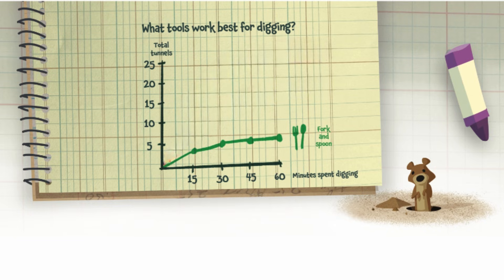The first line represents tunnels dug with fork and spoon. The second line shows total tunnels dug over time with a bucket and shovel. And finally, the third line, that's where the gophers used their own teeth and claws for digging.